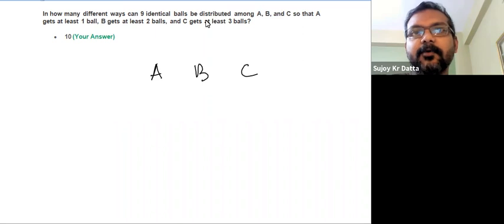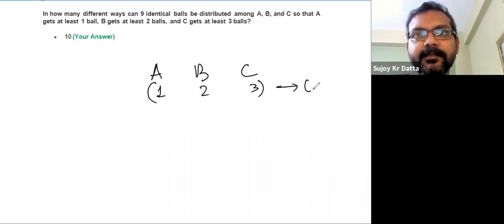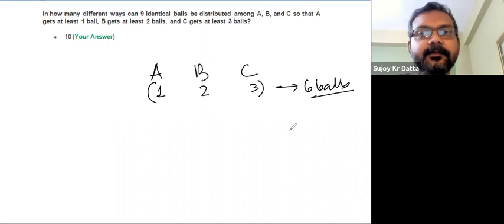Since the balls are identical, you just assign one ball to A, two to B, and three to C. So that takes care of six balls gone, and now you're left with three more balls.